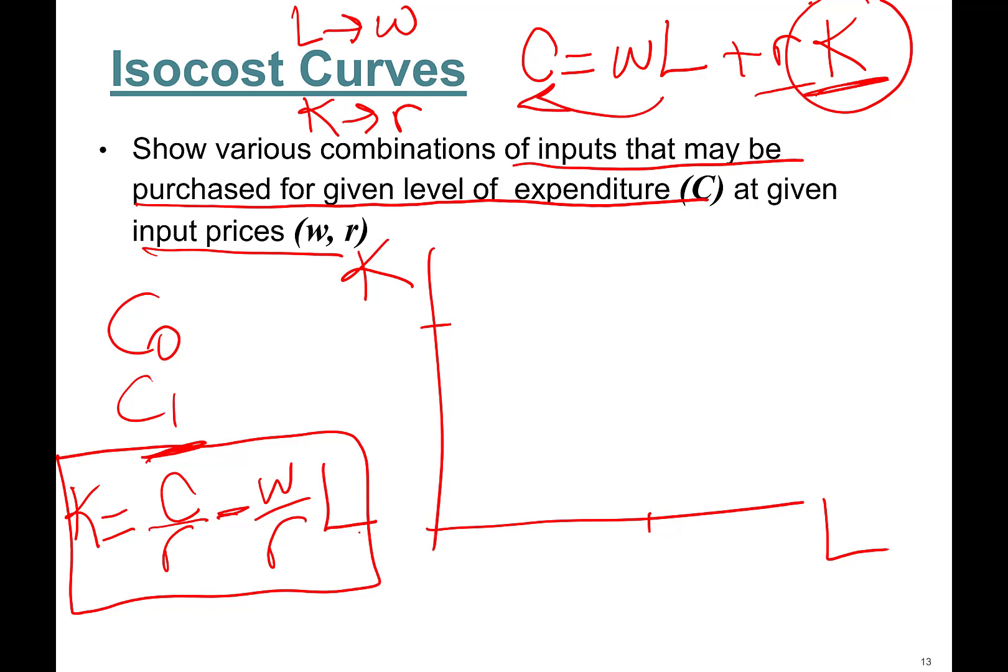Okay, linear line. So let's say if I hire zero workers, right, L is zero. The first term disappears—uh, the second term, sorry, disappears. So K is going to be equal to total cost divided by the unit cost of the capital. So that's the maximum units of capital you can purchase. Let's say you have $400, rental rate is $50.